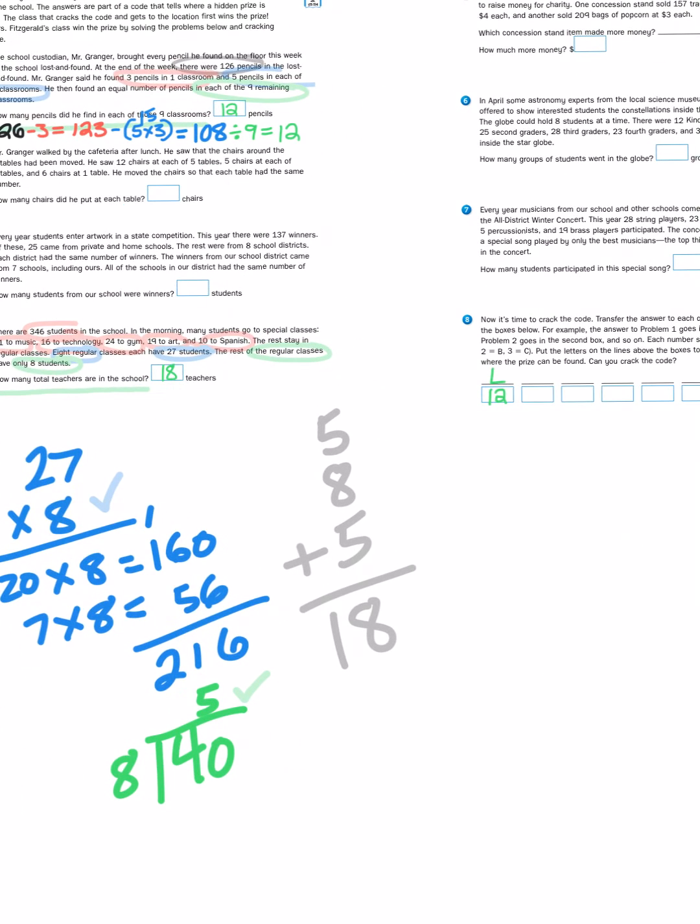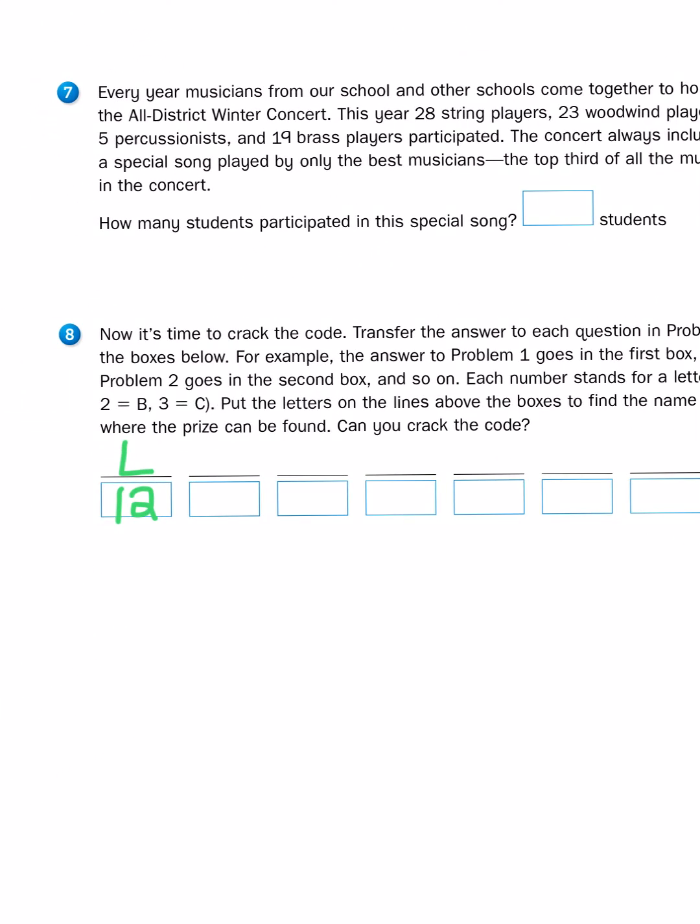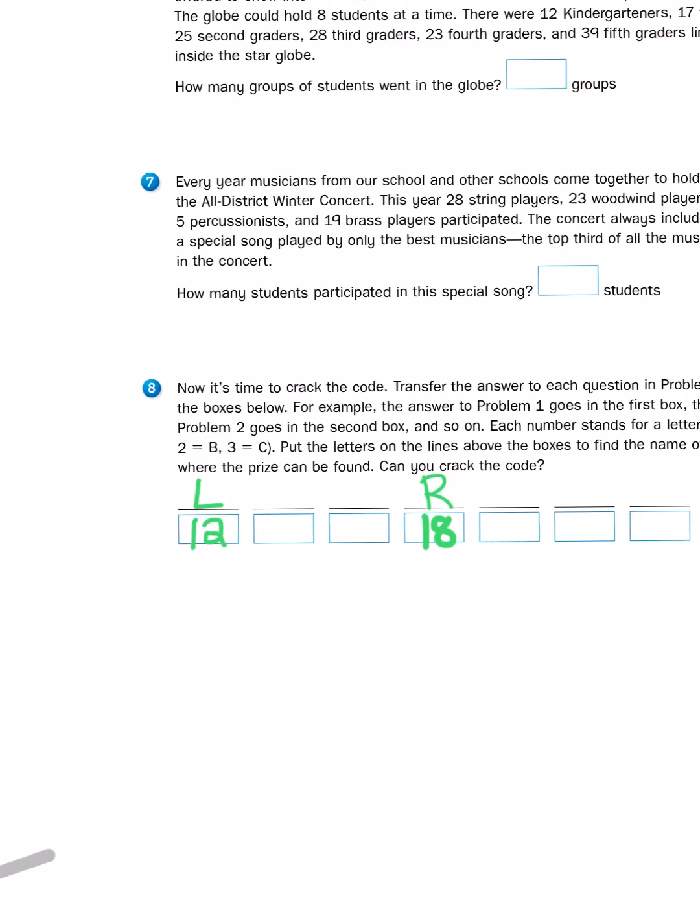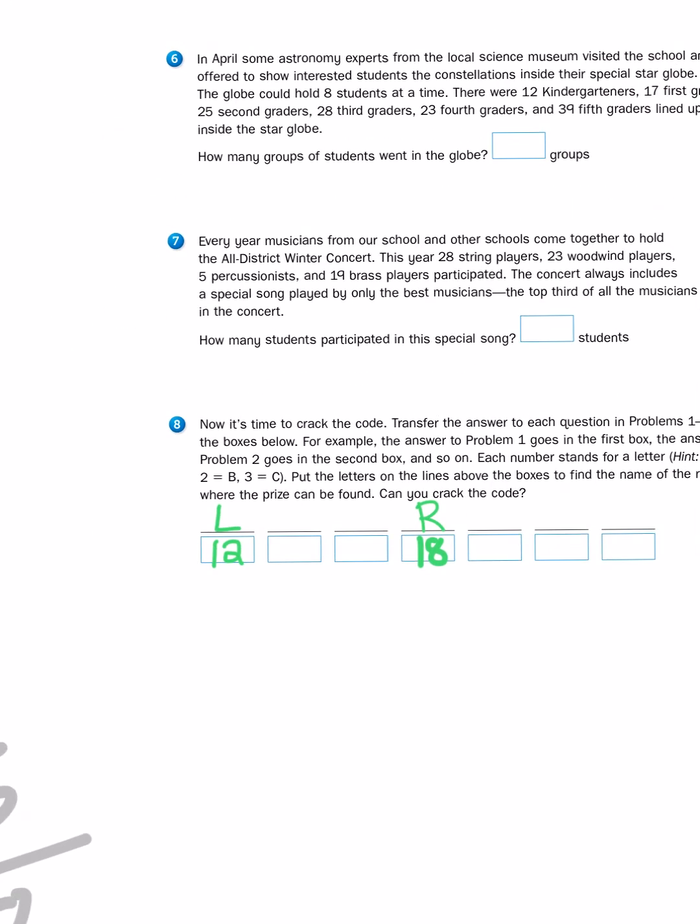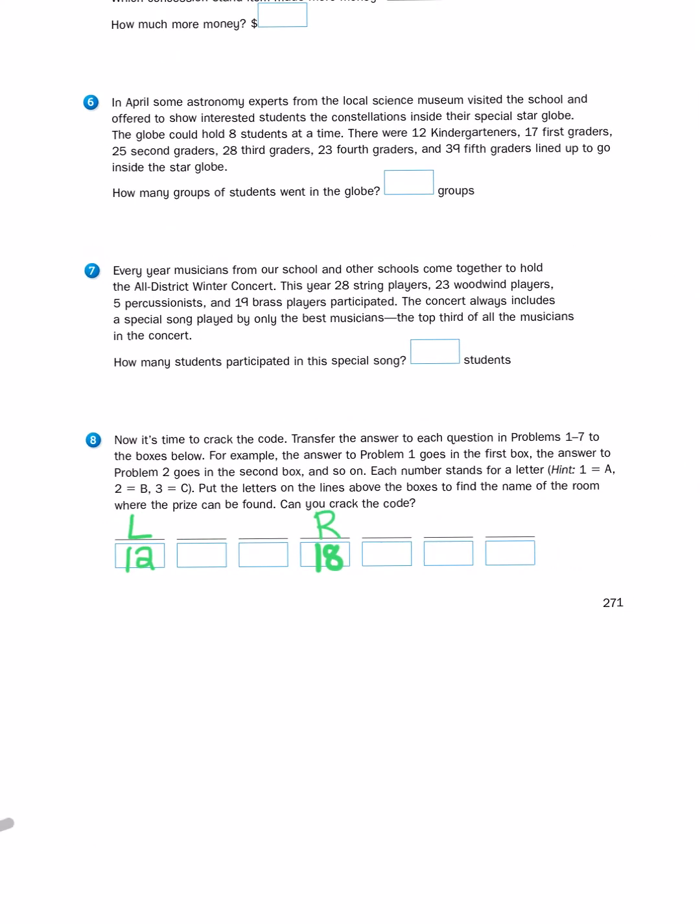I'm going to transfer that answer to my little code here. And of course, the 18th letter of the alphabet is R. So now we have one more letter clue to help us figure out the location of the super secret prize for cracking the code.